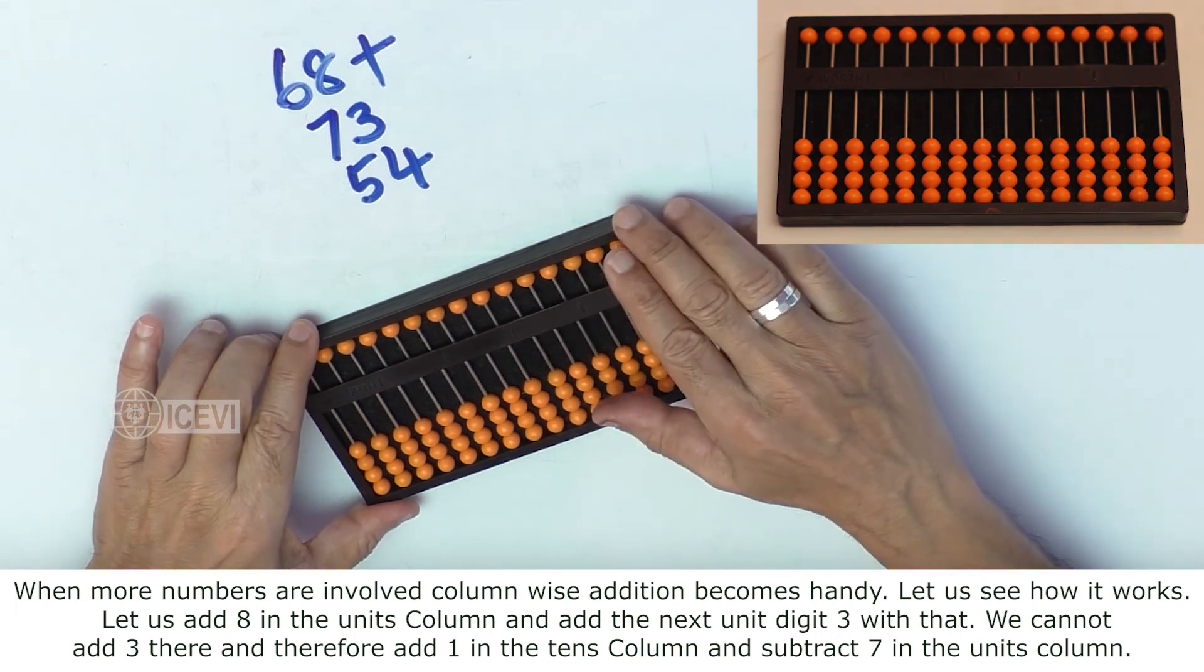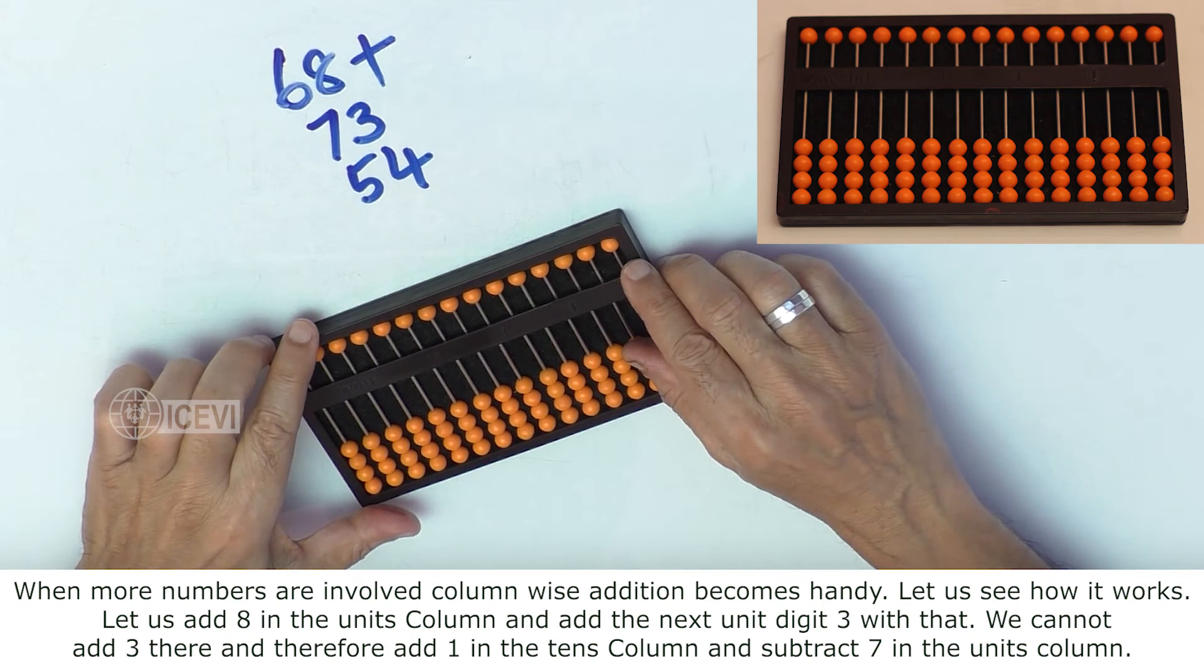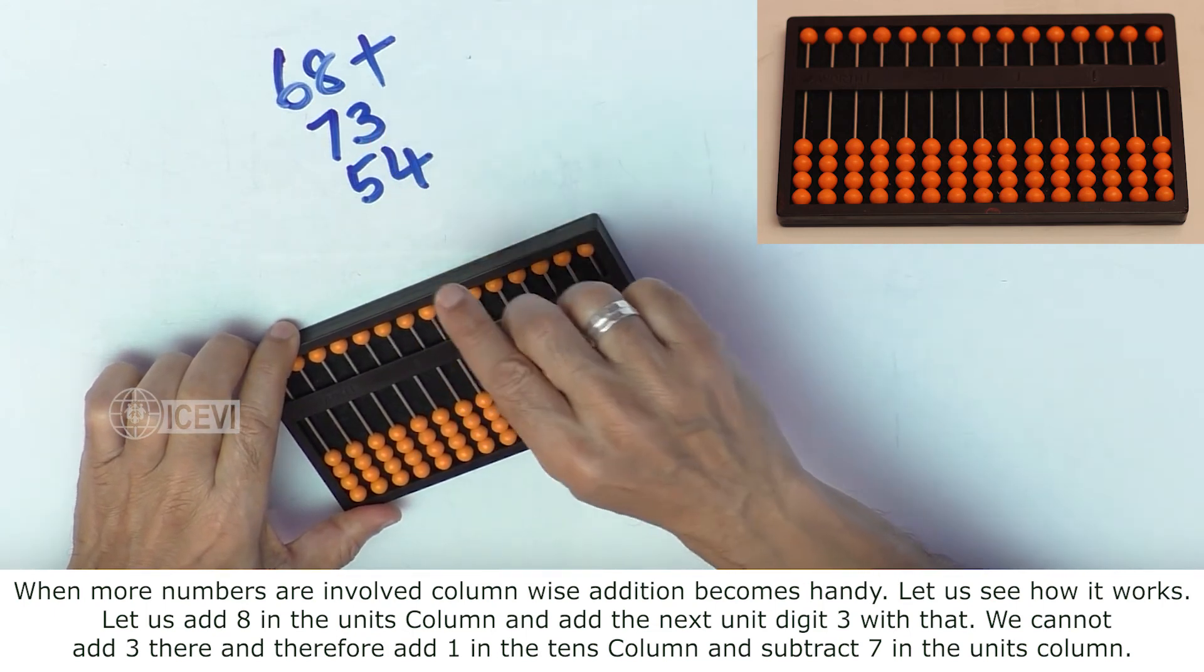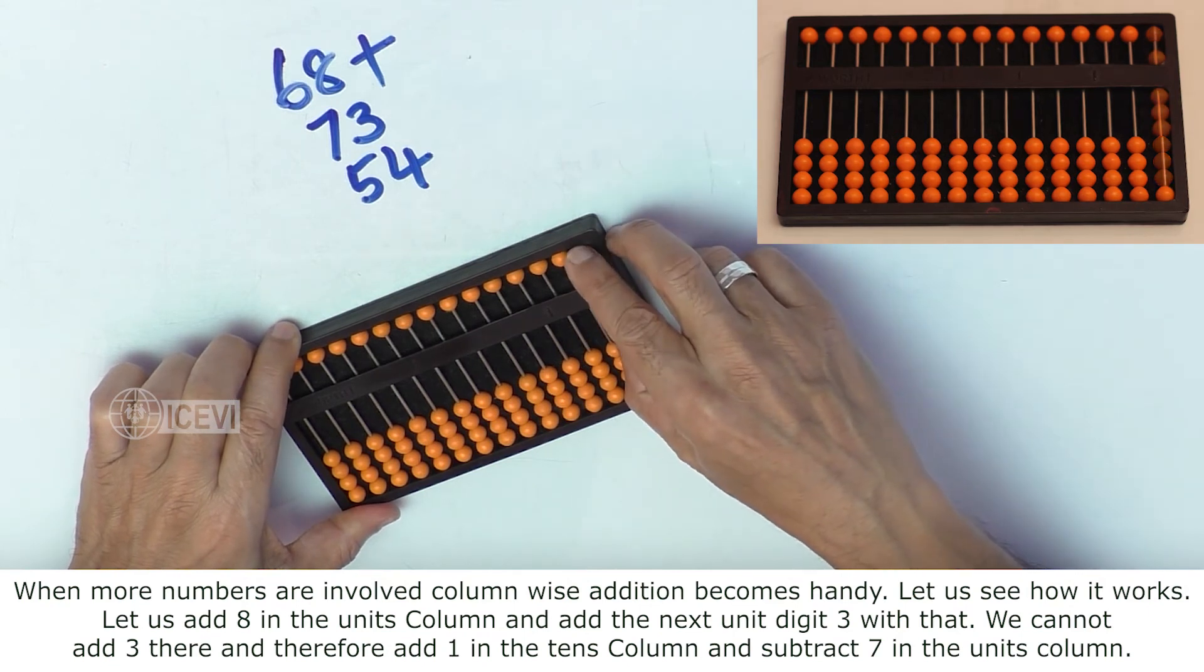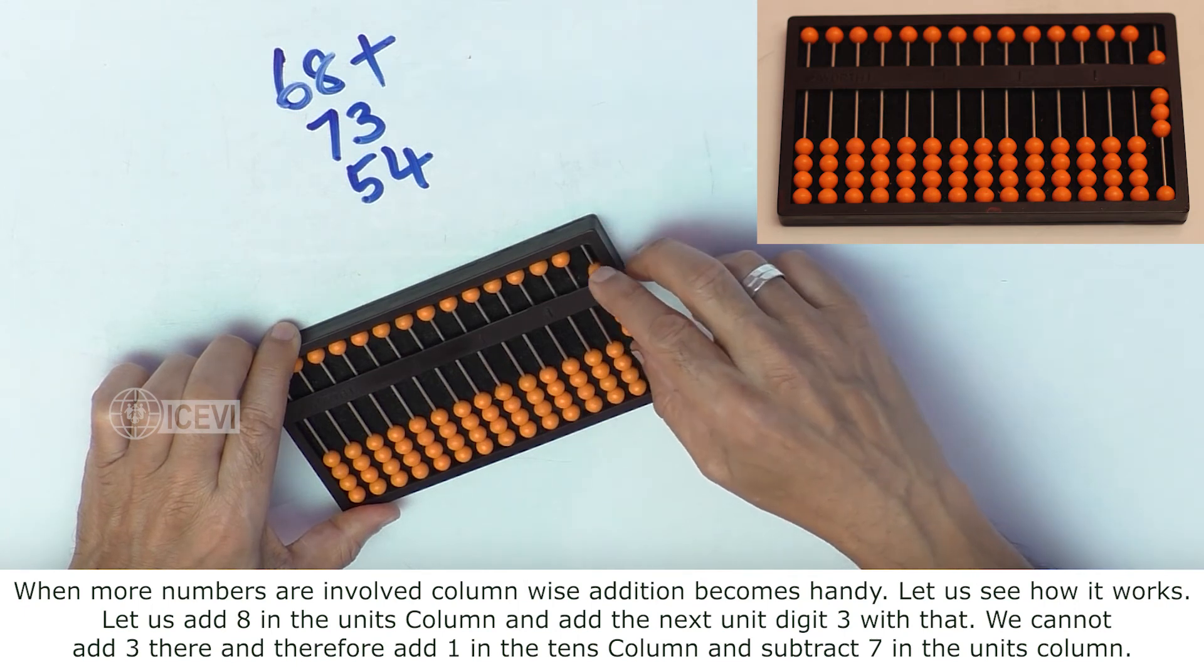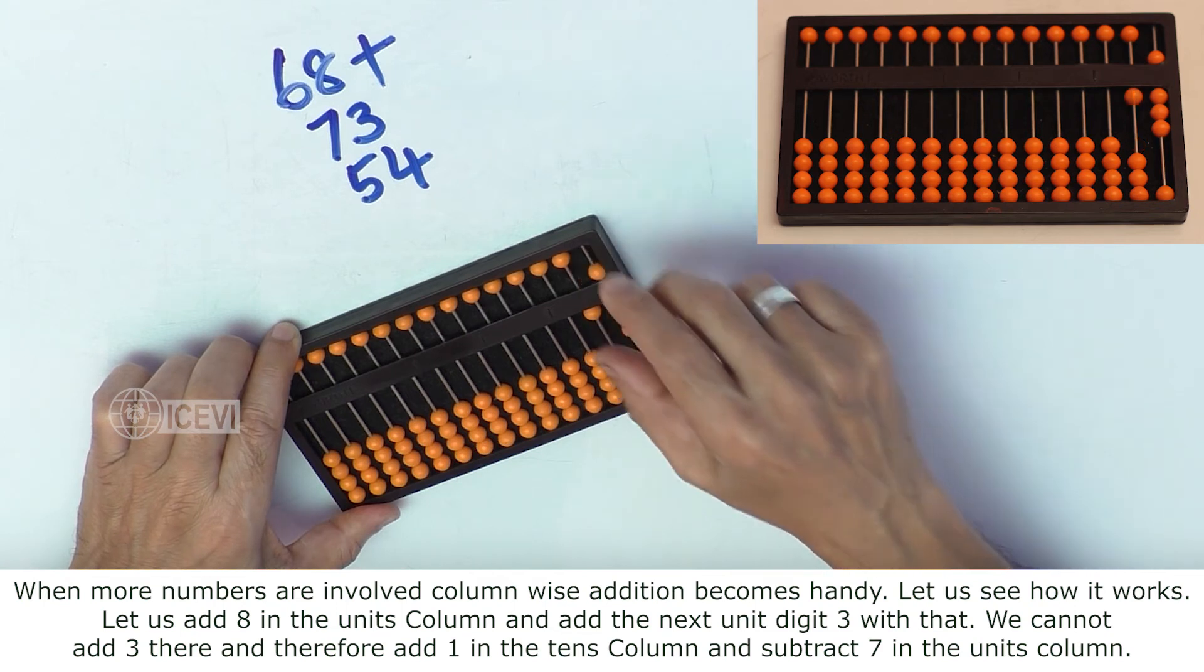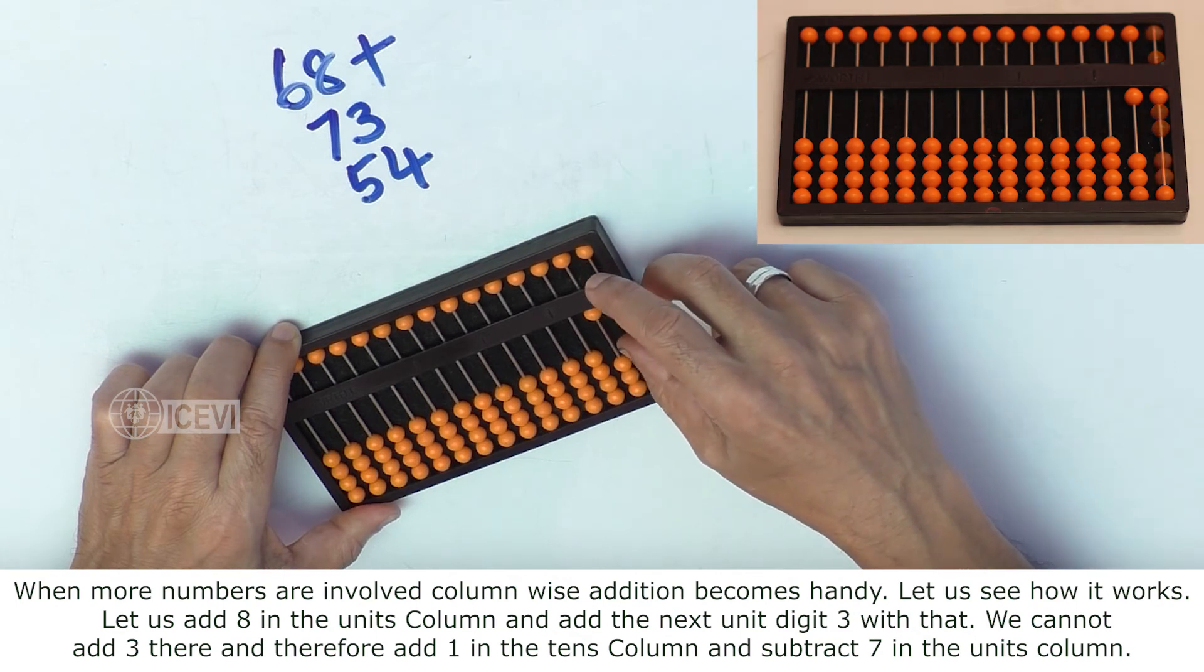When more numbers are involved, column-wise addition also becomes handy. Let us see how it works. Let us add 8 in the units column and add 3 with this. We cannot add 3 here, so we add 1 in the tens column and subtract 7.